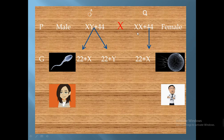In the female, all the ovary cells divide meiotically to give half the number of chromosomes. The 44 becomes 22, and XX becomes X — half the number of chromosomes of the original cell. So all ova will contain 22 plus X.